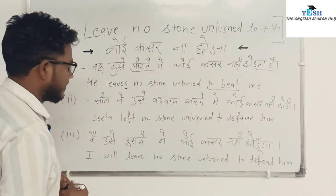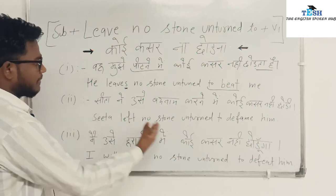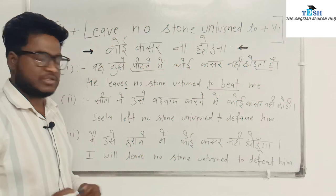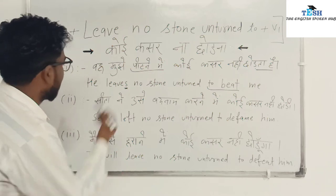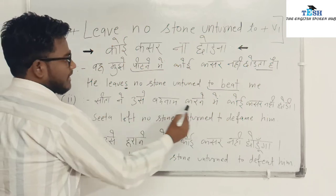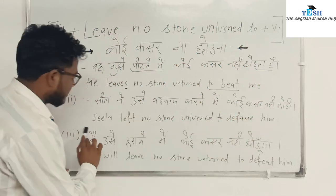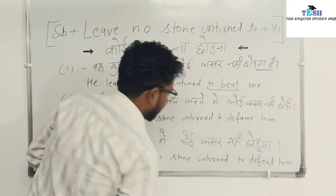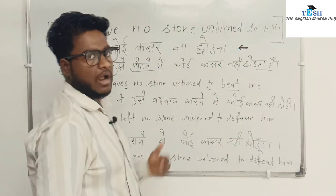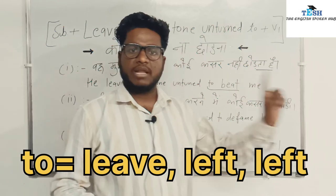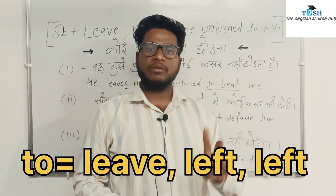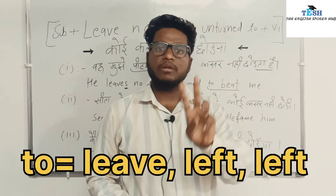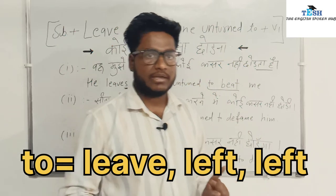This is the complete sentence. Now we will also understand the Hindi structure and how we can use it in past indefinite. For example: सीता ने उसे बदनाम करने में कोई कसर नहीं छोड़ी — Sita left no stone unturned to defame him. Here, 'left' is the second and third form of the verb 'leave'.